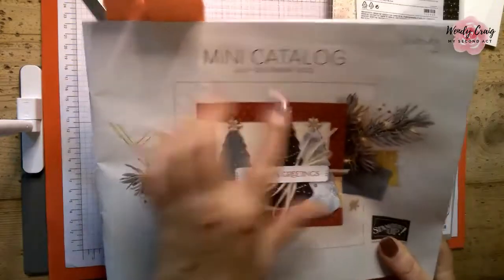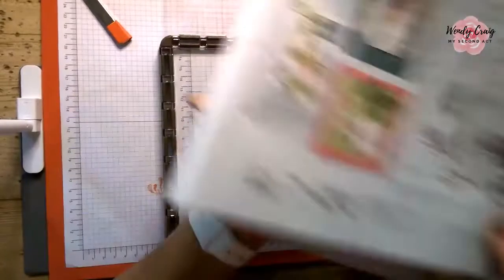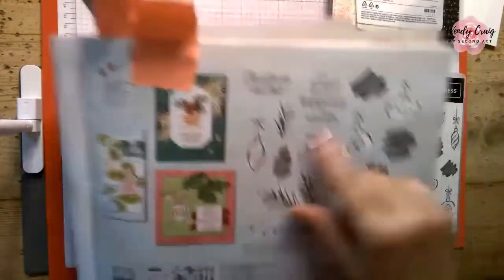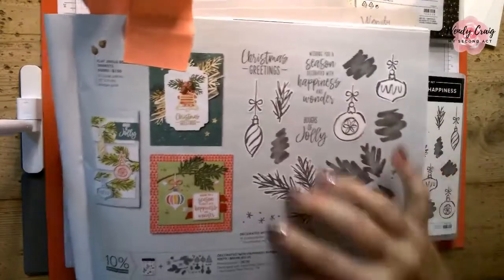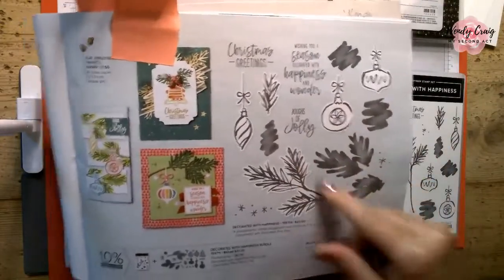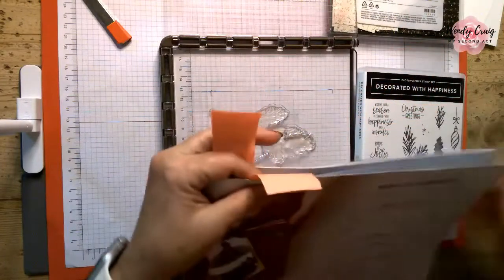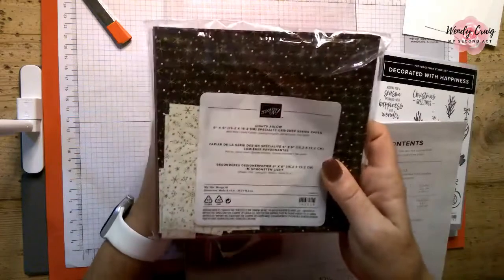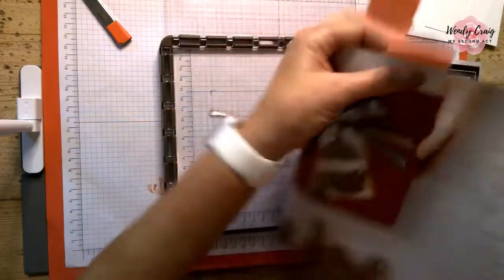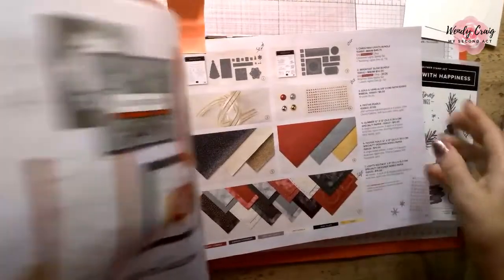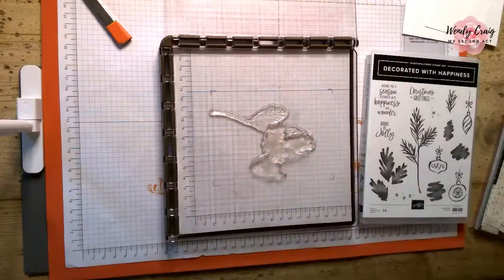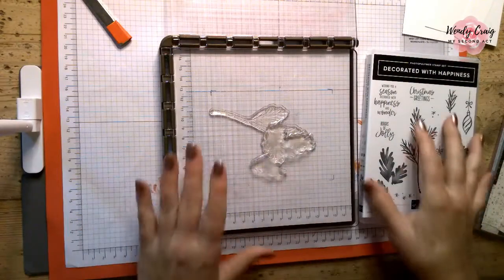We're using a stamp set called Decorated with Happiness Christmas set. It is in our July to December mini catalog, right there on page 27. Real nice stamp set with lots of good leaves, pine leaves, boughs of holly, I don't know what they're called, but some ornaments, some good sayings and sentiments. We're also going to be using a little bit of the six by six Lights Aglow paper. That is part of the Lights Aglow suite. The six by six paper is really pretty.